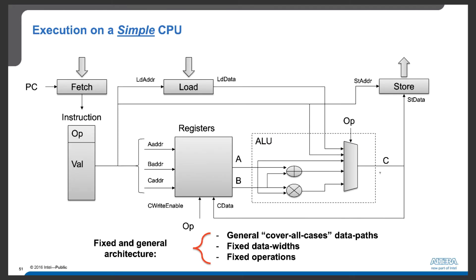Let's assume that these instructions are to be executed on a simple CPU. This CPU is a typical pipeline CPU with a few functional units in the datapath. First, we use a program counter to fetch instructions, and each instruction will be stored into the instruction register where it will be further decoded.